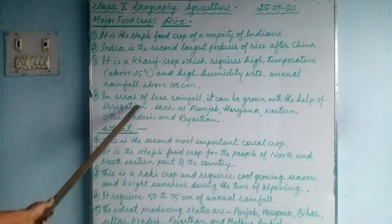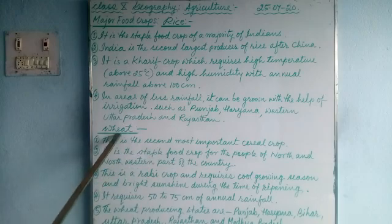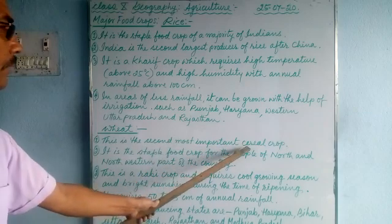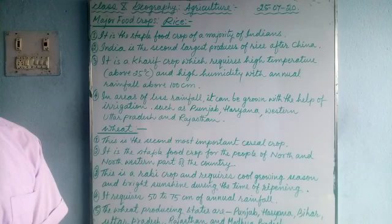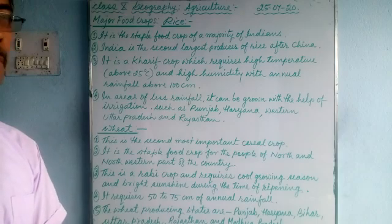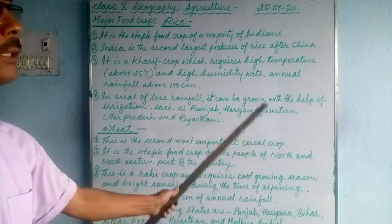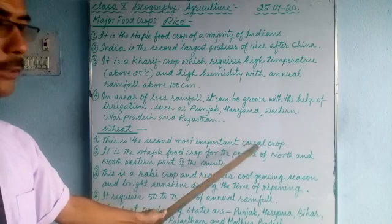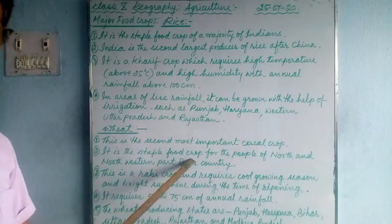Now we will talk about wheat. Wheat is the second most important cereal crop — cereal means food grains. It is the second most important cereal crop after rice, so first rice and second wheat.